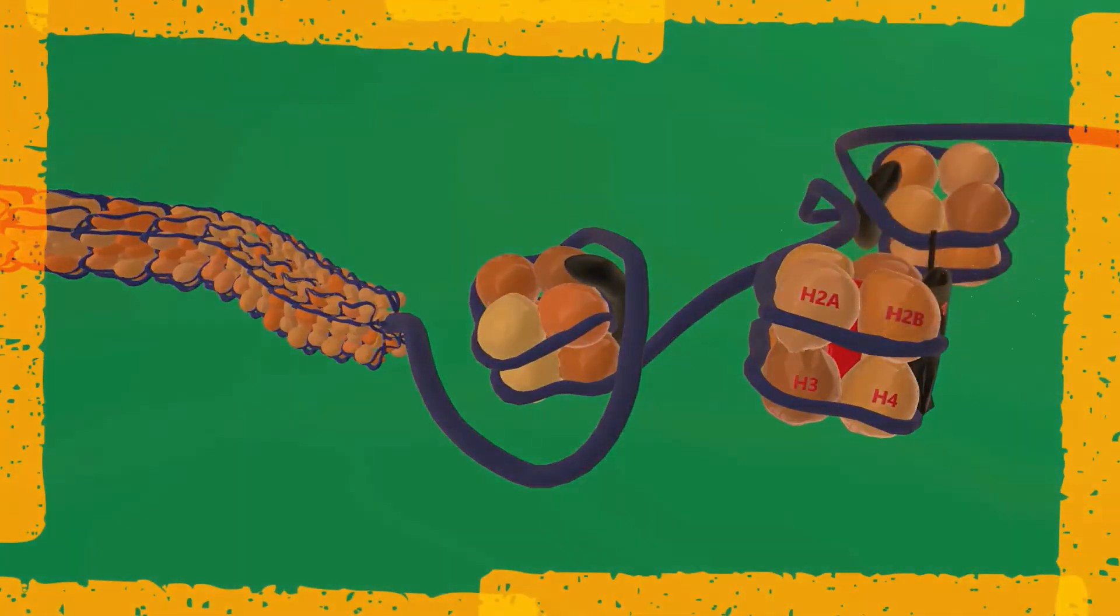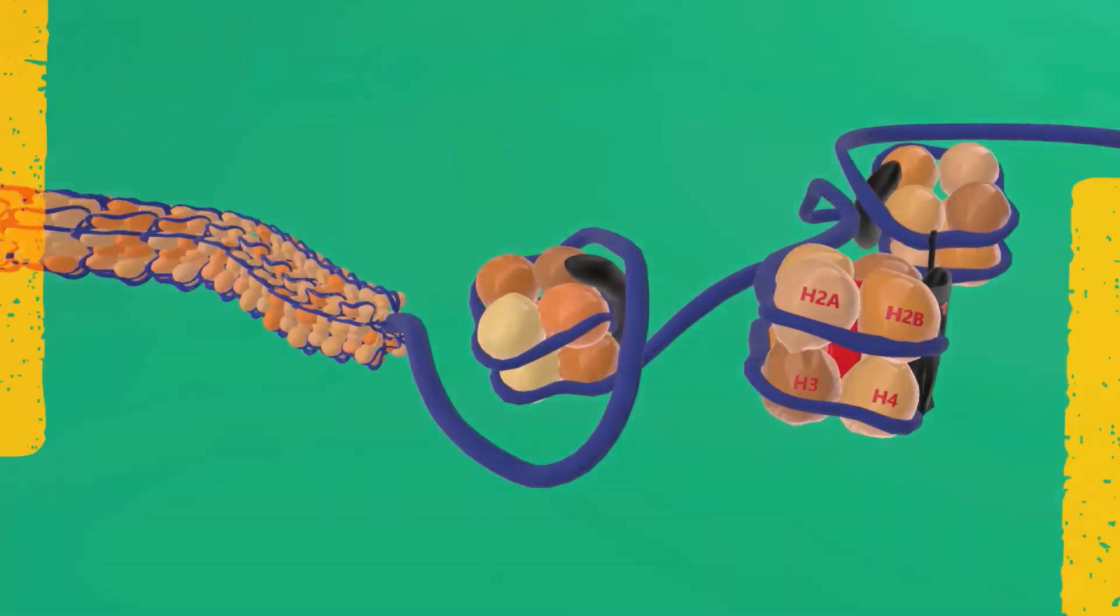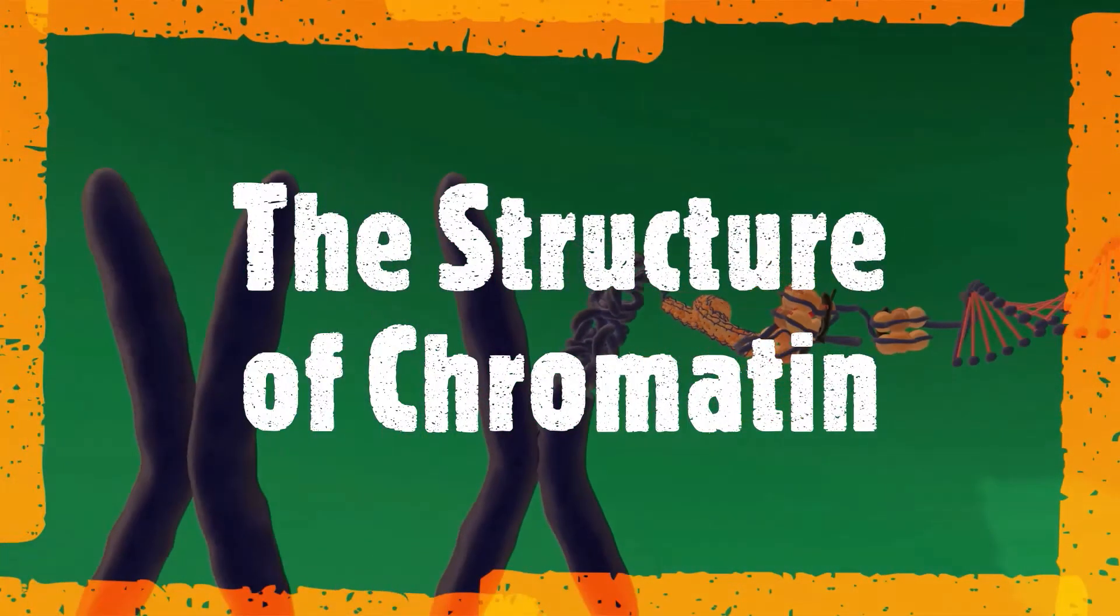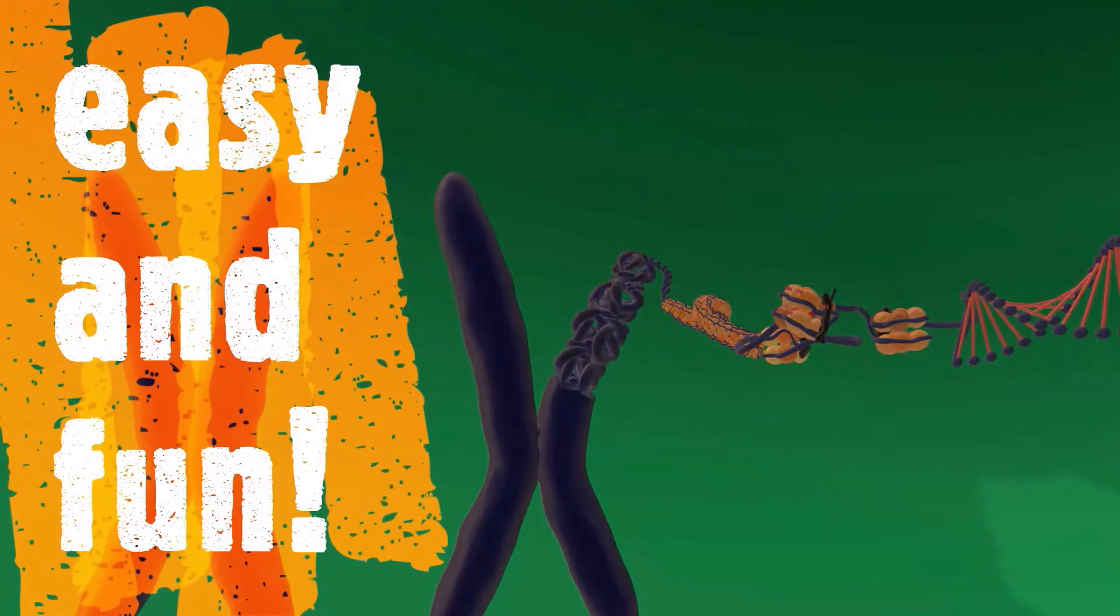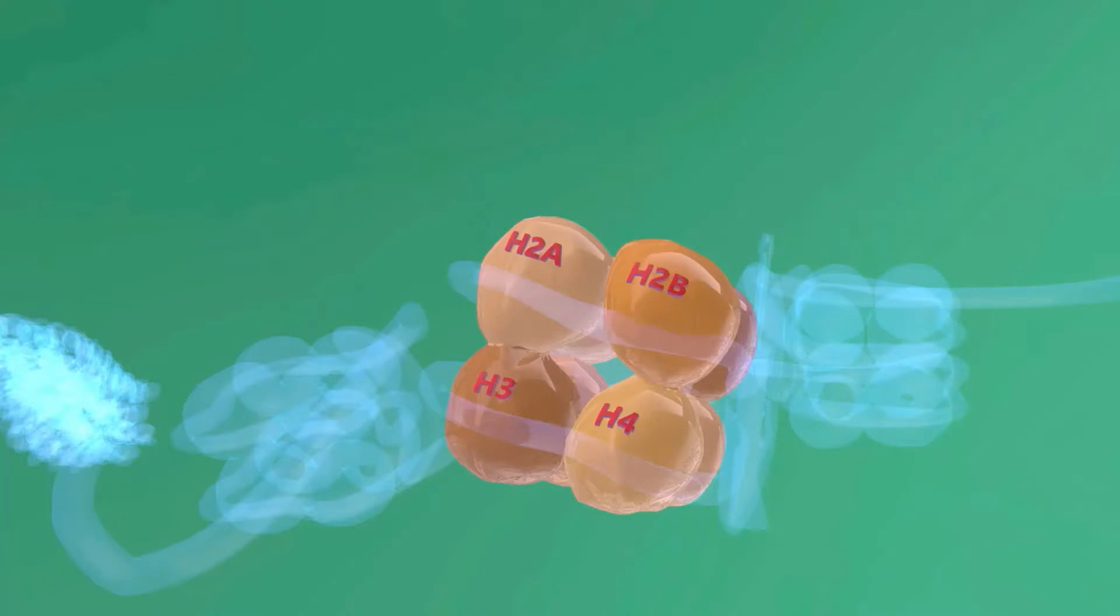Alright, in this scene we're going to talk about a very basic topic, the structure of chromatin, and we're going to make it really easy and a lot of fun. So let's begin. Here we see the histone octamer.